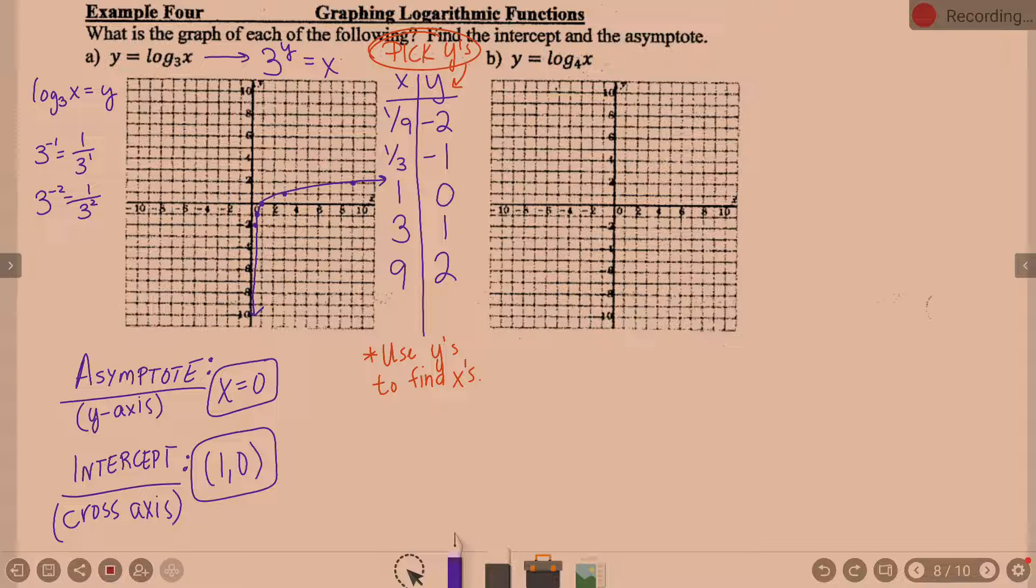Now what do I mean by intercept? Where does this graph cross an axis? At one on the x-axis, which is the ordered pair one comma zero. I'm just going to draw this in dotted line. Here's the idea of what the equivalent exponential function would look like. Notice, do you see the reflection here? Because the idea of inverses is that inverses reflect across the line y equals x. If I took that graph and folded it in half, would those two graphs land on top of each other? And they would.